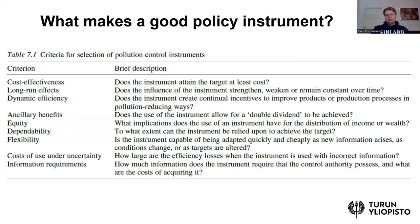There are also equity considerations that policy makers often have to take into account — how the instrument influences the distribution of income and wealth, and perhaps the regional distribution of income. Dependability is another issue: to what extent can the instrument actually achieve the target? Tradable emission rights are very dependable because the government can directly control the quantity and let markets determine the price, whereas an emission tax is perhaps less dependable because setting the price does not guarantee the resulting quantity.